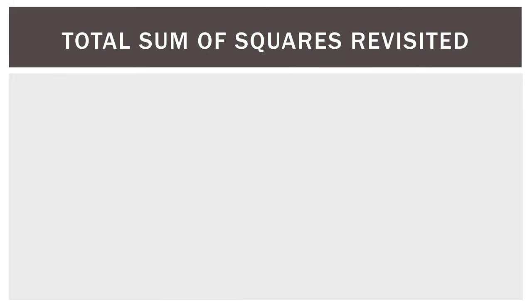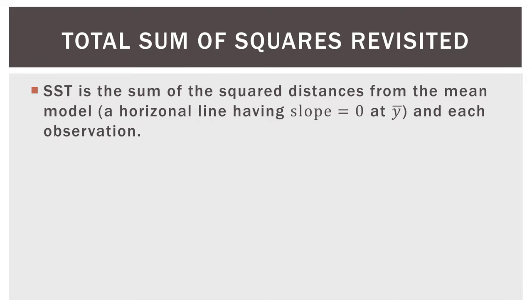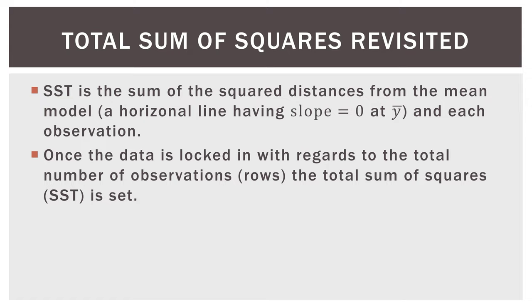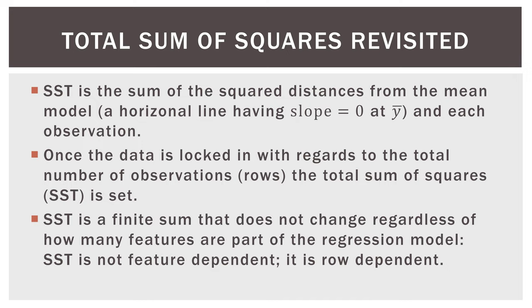Let's refresh our memory about some fundamental ideas. The first is the total sum of squares, SST. SST is the sum of the squared distances from the mean model — in two dimensions, a horizontal line at the mean of the target variable — to each observation. Once the data rows are locked in, SST is set. It does not change regardless of how many features are in the regression model. SST is row-dependent, not feature-dependent.